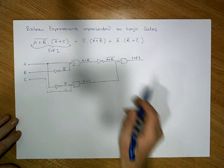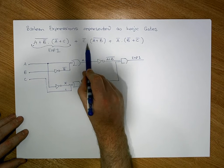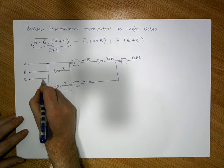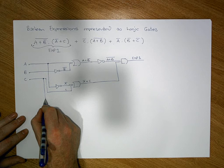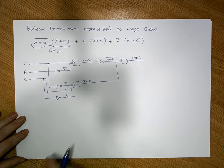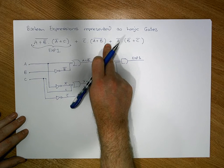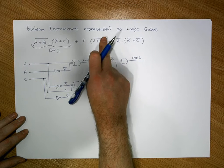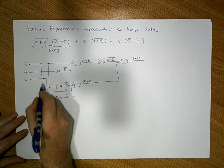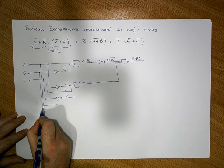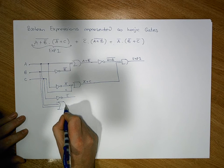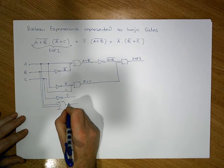Now let's start with Expression 2. Expression 2 has a main AND, a left operand, and a right operand. Before we can do the AND we need a C-bar signal, so we take the C signal and pass it into an inverter to give us C-bar. Now for the right operand, which is (A OR B)-bar, we need A OR B first, so we take the A signal and the B signal and pass them into an OR gate to give us A OR B.